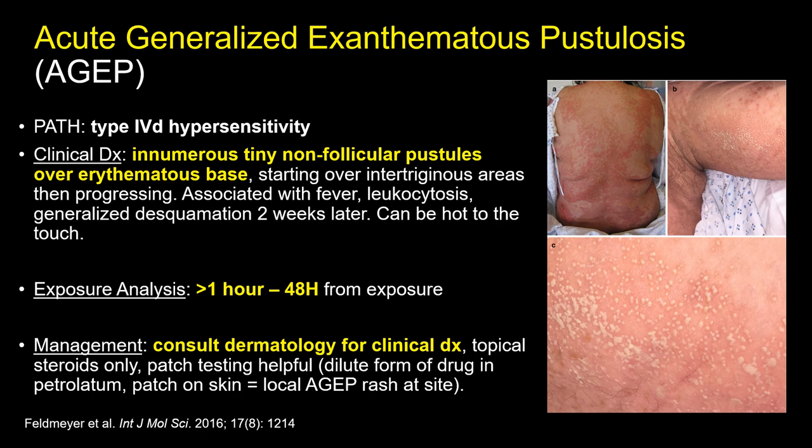AGEP is actually associated with drug fever and some leukocytosis but is overall benign. Unfortunately, this rash is commonly confused as a skin soft tissue infection, especially when it starts localized and then spreads since it can be hot to the touch. The pustules will resolve and the rash typically exfoliates one to two weeks later without complication. Although dermatology is often consulted for the clinical diagnosis, only topical steroids are typically needed for treatment. Rarely, an AKI is associated, and the safety of re-challenge in cases of AGEP is currently unknown. Importantly, AGEP spares the mucous membranes and can mimic generalized pustular psoriasis.